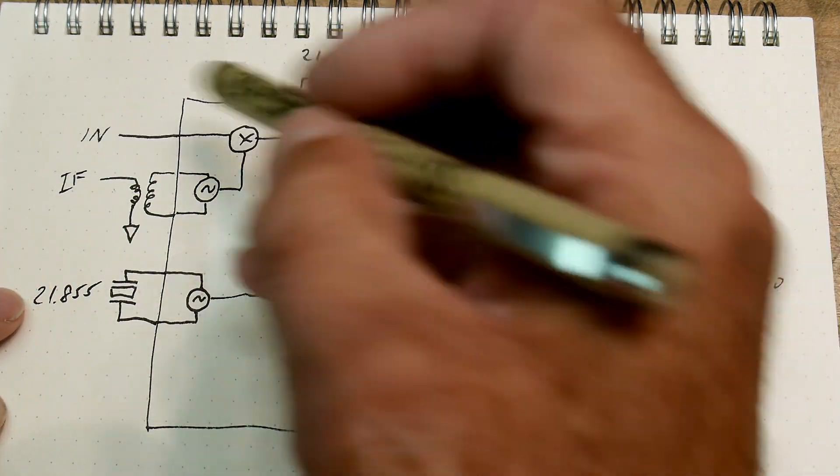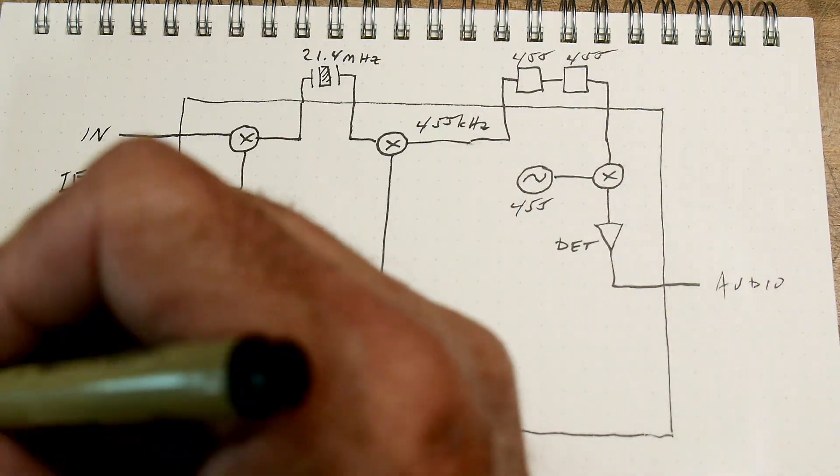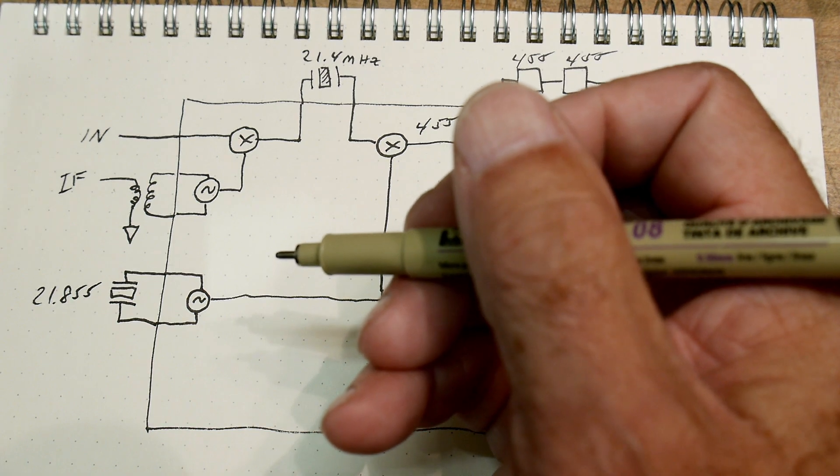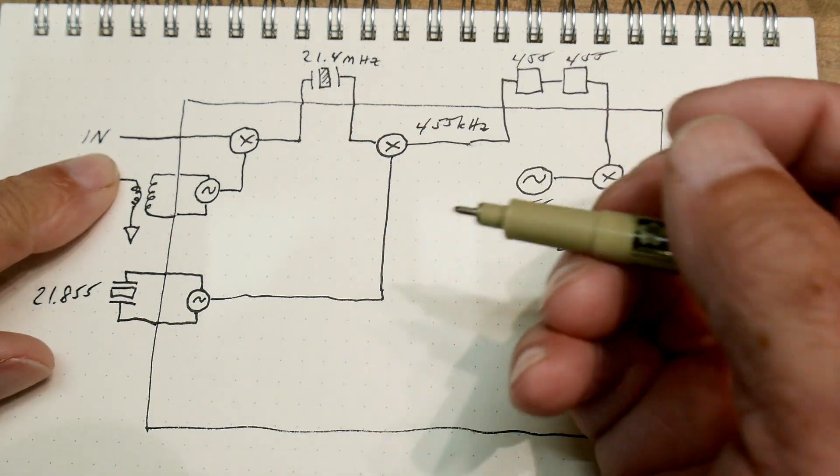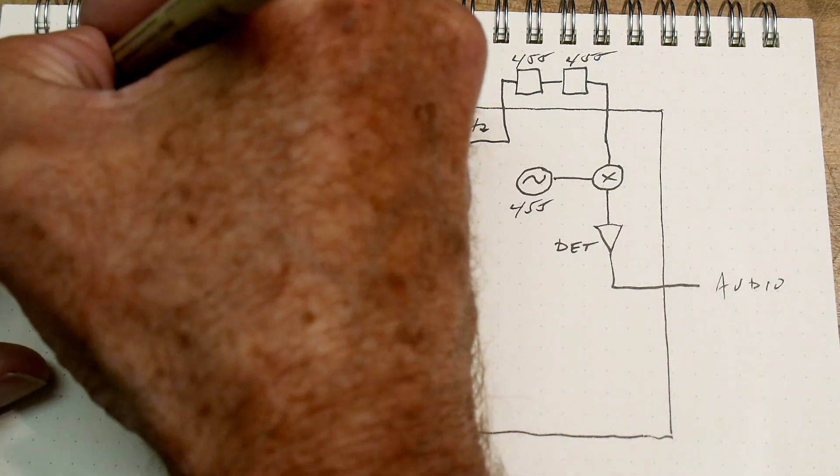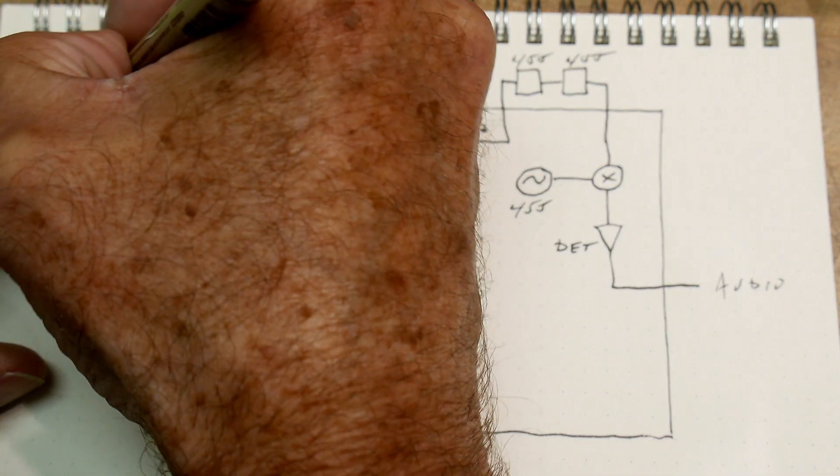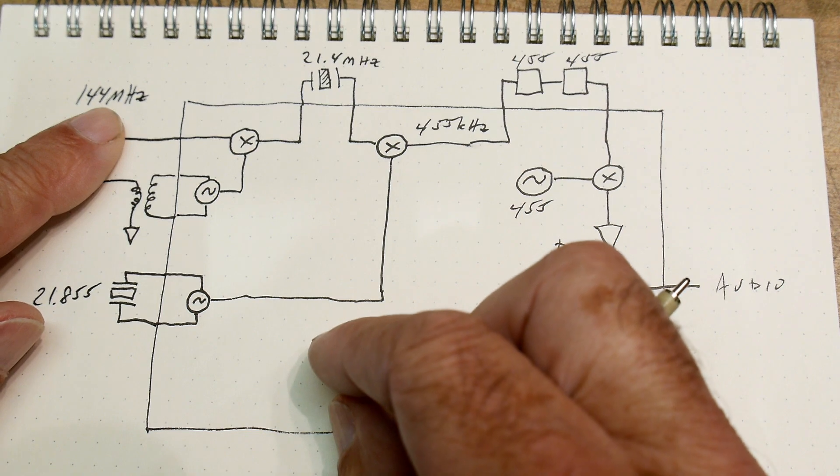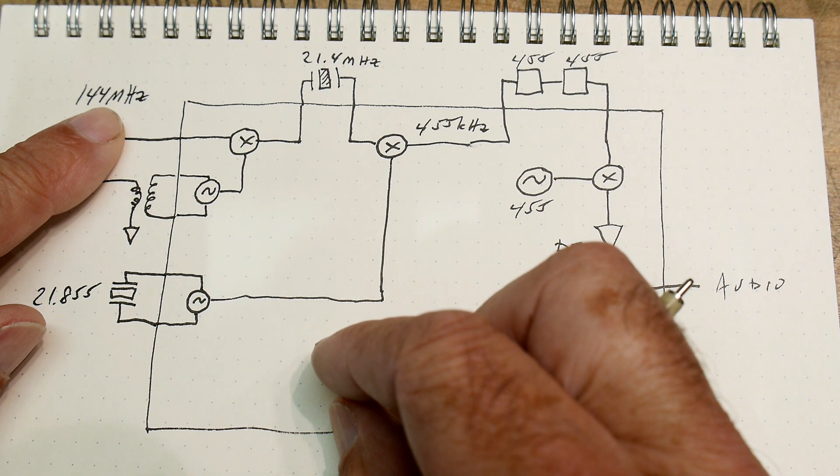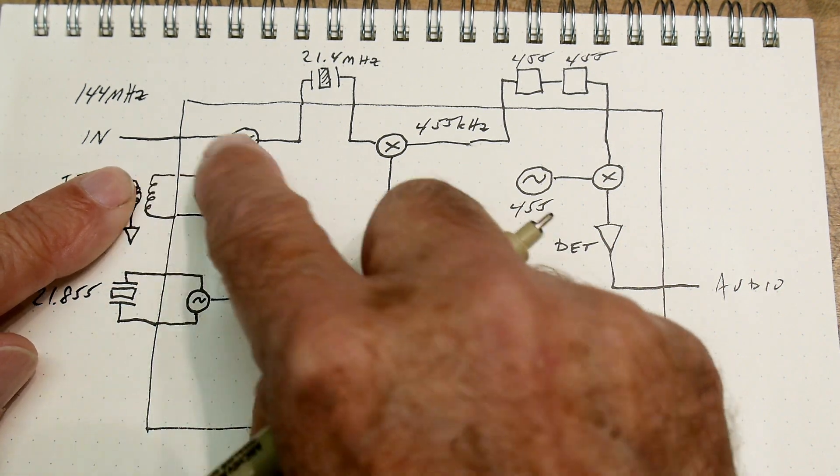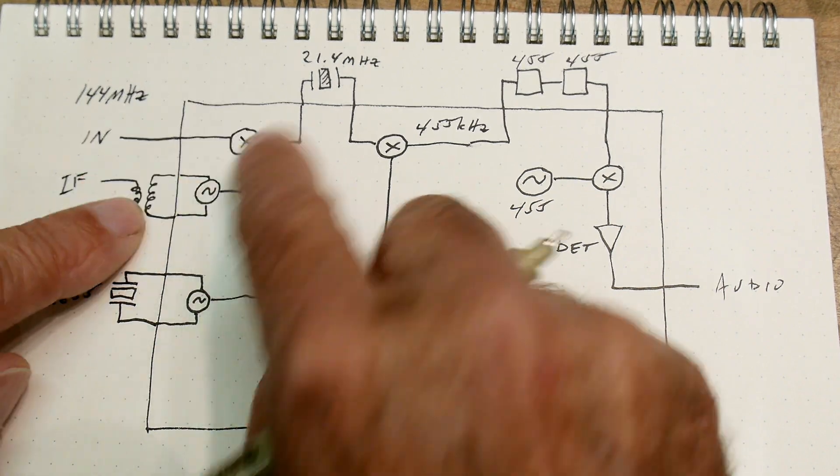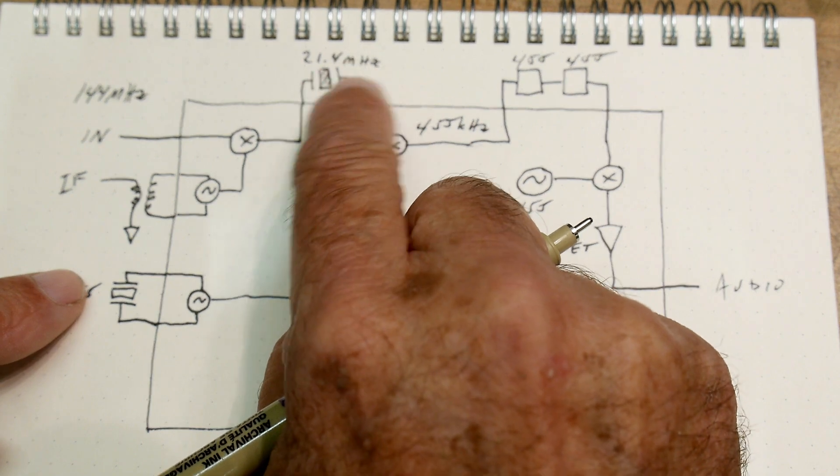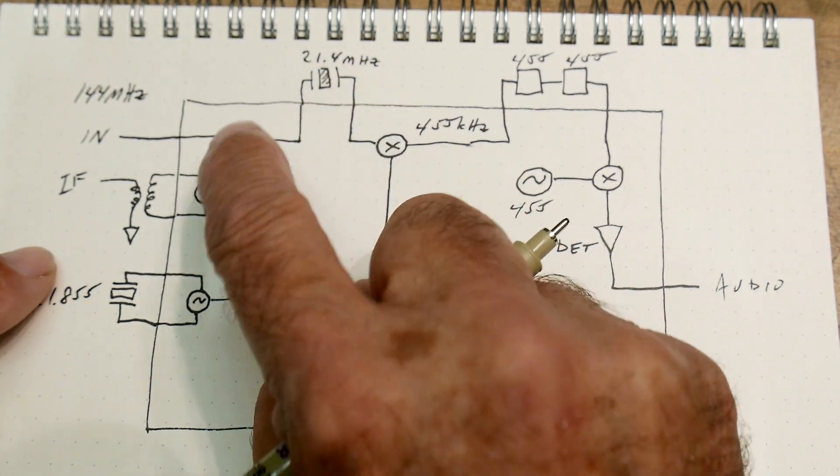So we are going to have an input, and our input is going to be our radio. It'll be like, say, 144 megahertz. Now we are first going to mix it. This is a mixer here. We're going to mix it down to an IF frequency of 21.4 megahertz. Our first IF will be 21.4 megahertz, and they're going to use an external crystal for a filter.